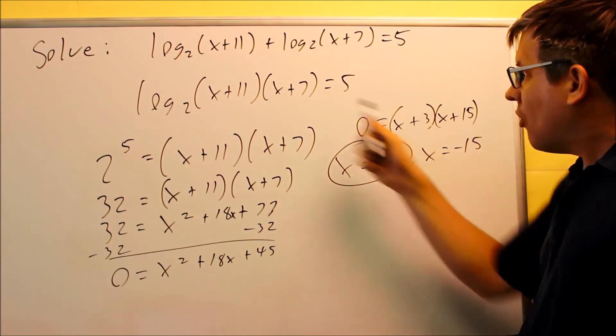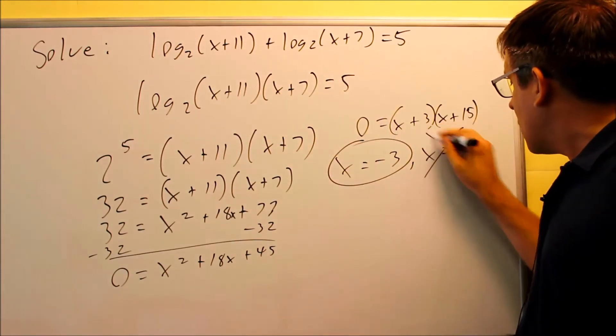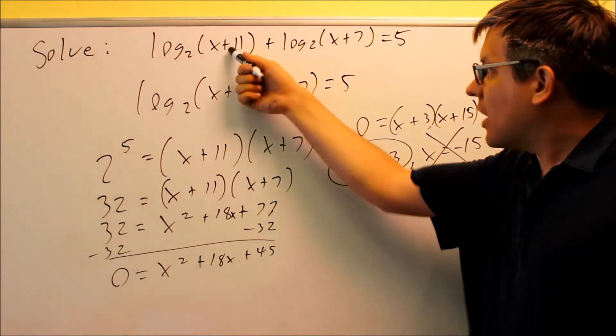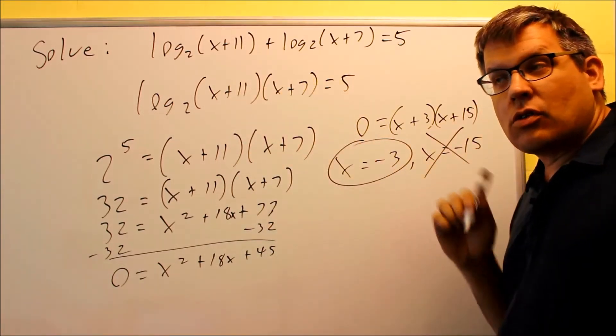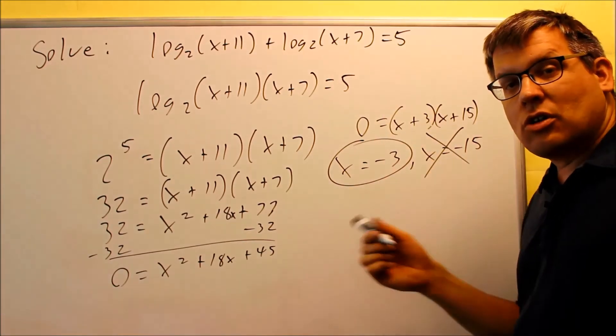So again, we did negative fifteen plus eleven, that gave us a negative result. That number is not allowed because it makes a negative inside the log, and we know that logarithms, you can only use positive numbers in there, and zero is not allowed either.